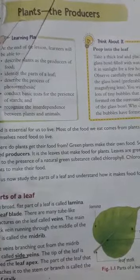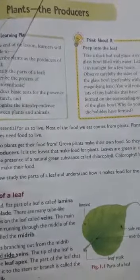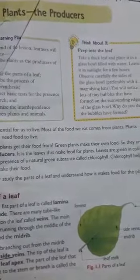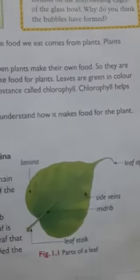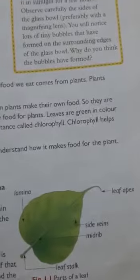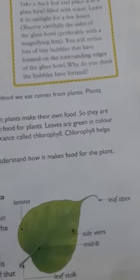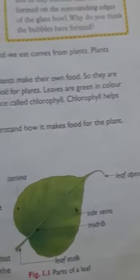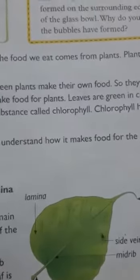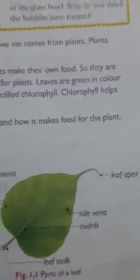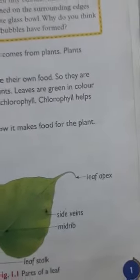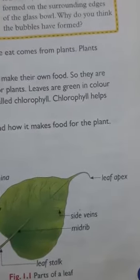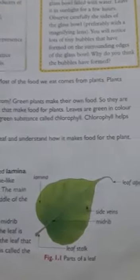It is the leaf that makes food for plants. Leaves are green in color because of the presence of a natural green substance called chlorophyll. Chlorophyll helps the plant to make its food.